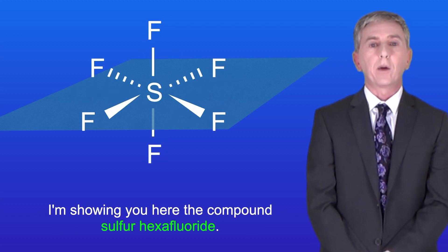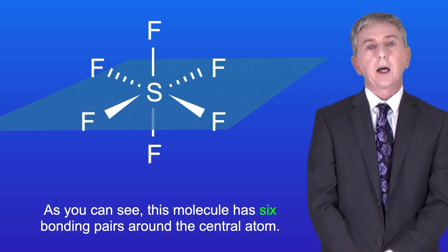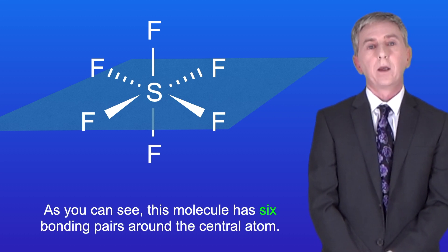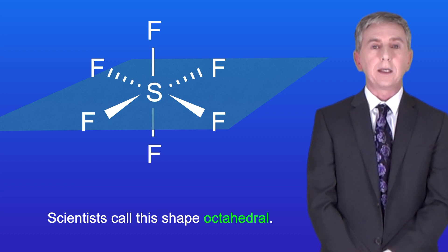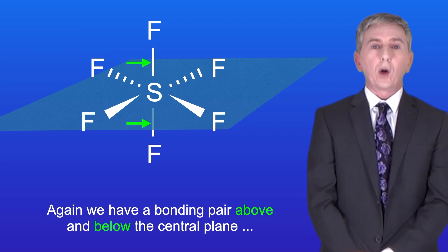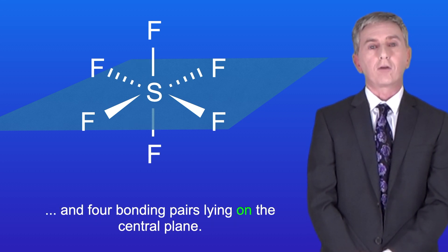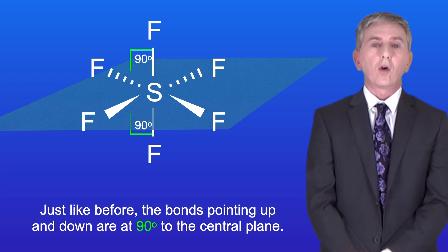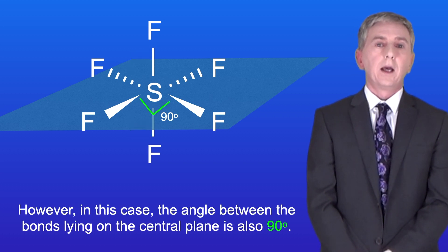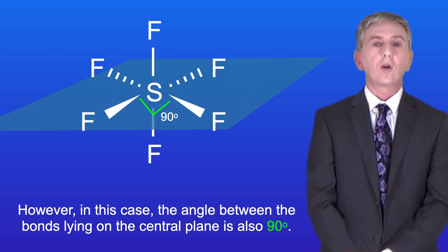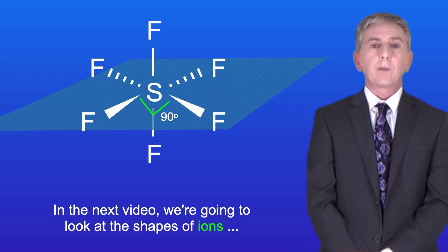Sulfur hexafluoride has six bonding pairs around the central atom. Scientists call this shape octahedral. There is a bonding pair above and below the central plane, and four bonding pairs lying on the central plane. The bonds pointing up and down are at 90 degrees to the central plane, and in this case the angle between the bonds on the central plane is also 90 degrees. In the next video we're going to look at the shapes of ions and how to deal with lone pairs of electrons.